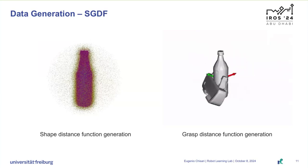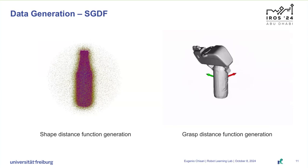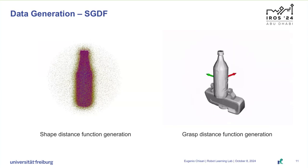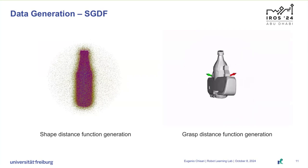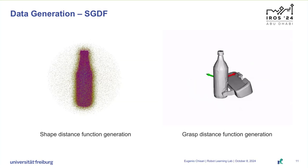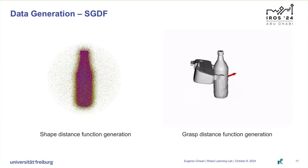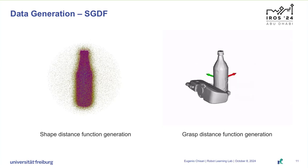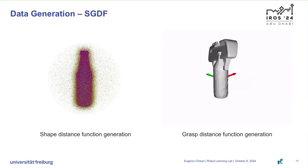To generate grasp candidates for each object mesh, we first sample 1,000 surface points from the object. For each point, we align the gripper fingers to the normal. Finally, we sample 24 different wrist rotations uniformly by consecutively applying a 15-degree rotation around the z-axis of the gripper, for a total of 24,000 grasp candidates per object. From these candidates, we compute the ground truth grasp labels by checking for collisions and evaluating their antipodality. On average, we find around 8,500 valid grasps per object. Then, for each object, we use the mesh-to-SDF library to sample 100,000 points and their respective SDF values. For each point, we find the closest grasp from the set of ground truth grasps and compute the respective grasp distance label.